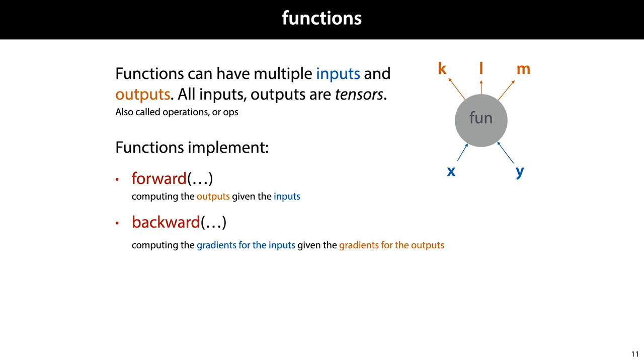The next ingredient we need is functions that consume tensors and spit out new tensors. A function can have multiple inputs and multiple outputs, and all of them are tensors. Non-tensor inputs are sometimes allowed, but when we start computing gradients, we'll only get gradients over the tensor inputs. Functions exist in many programming environments, and all we usually have to do to specify a function is to define how to compute the output given the inputs. In deep learning parlance, this is called the forward of the function. For a deep learning function, we need to specify one additional thing, a backward function. The backward receives the gradients for the outputs and computes the gradients for the inputs. We'll see some examples of this in the second video.